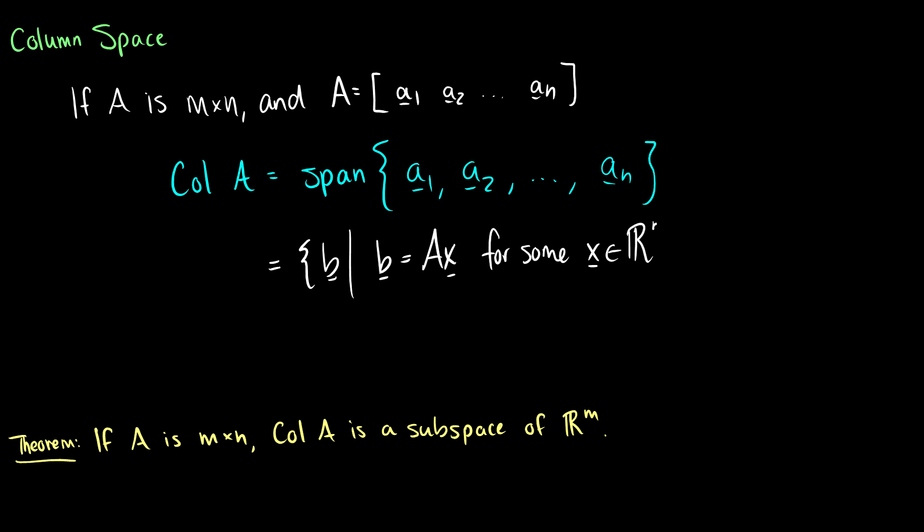So this is another way we can look at the column space. It is basically the span. So we have a theorem here that if A is m by n, then the column space of A is a subspace of R^m.